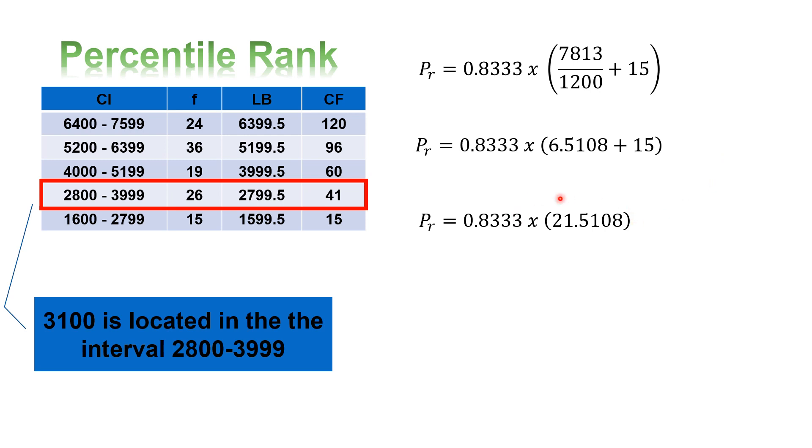And then, you multiply that to 0.8333. In our solution, we'll use 4 decimal places, and then for the final answer, 2 digits. So, the percentile rank is 17.92.